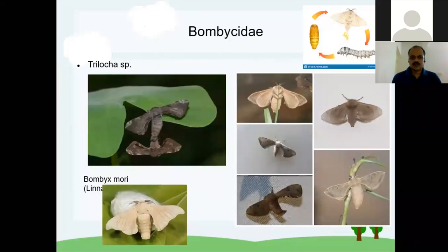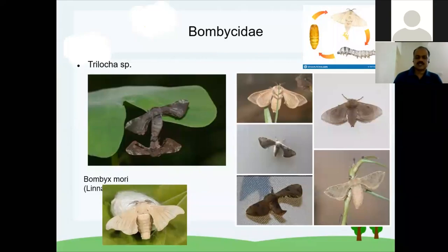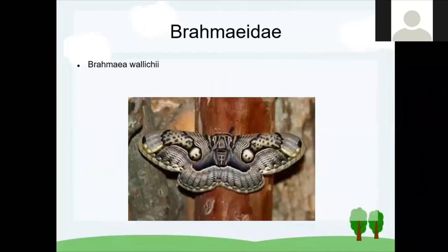Another interesting group is the Bombycidae family, which includes the famous silk moth — Bombyx mori — commercially used for producing silk in India. The shape of this moth's wings is distinctive: you can see an axe-like shape for the four wings, the hind wing is very small, and it has a stout body. This is the Bombycidae family type.